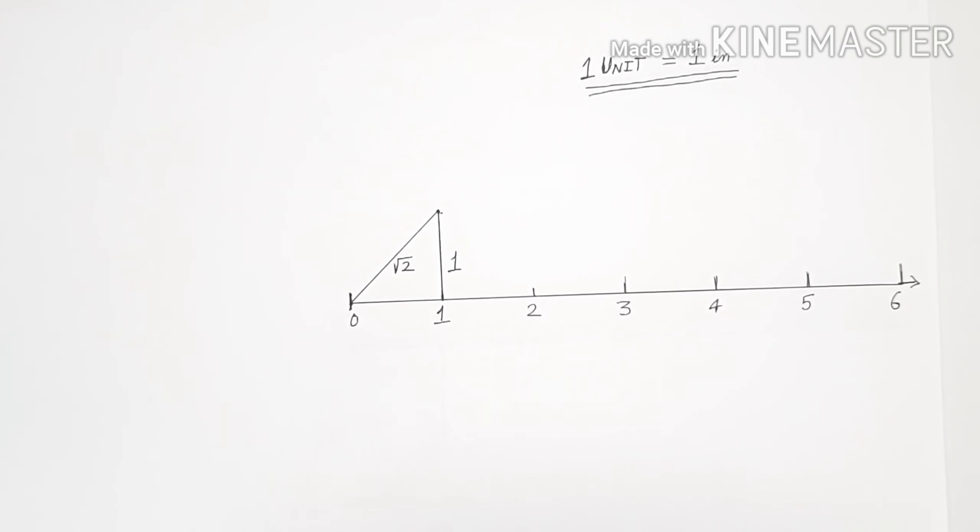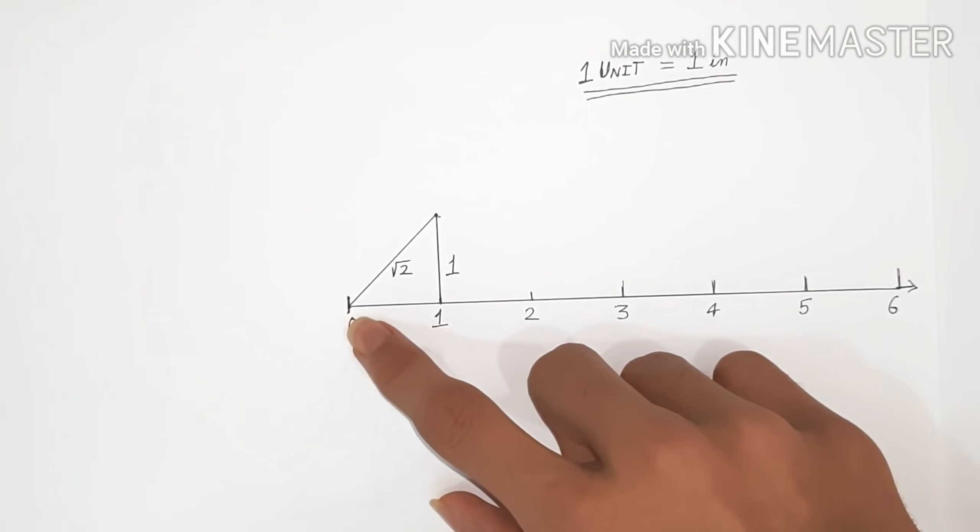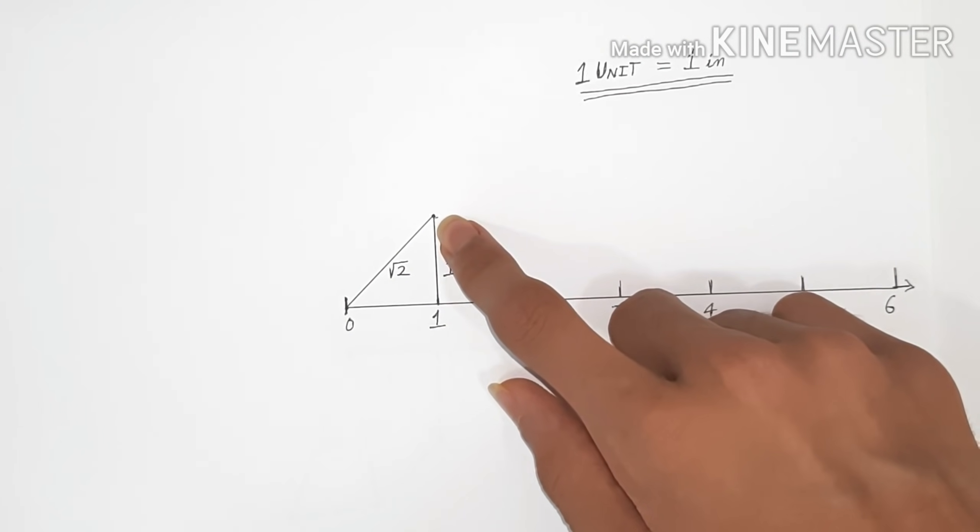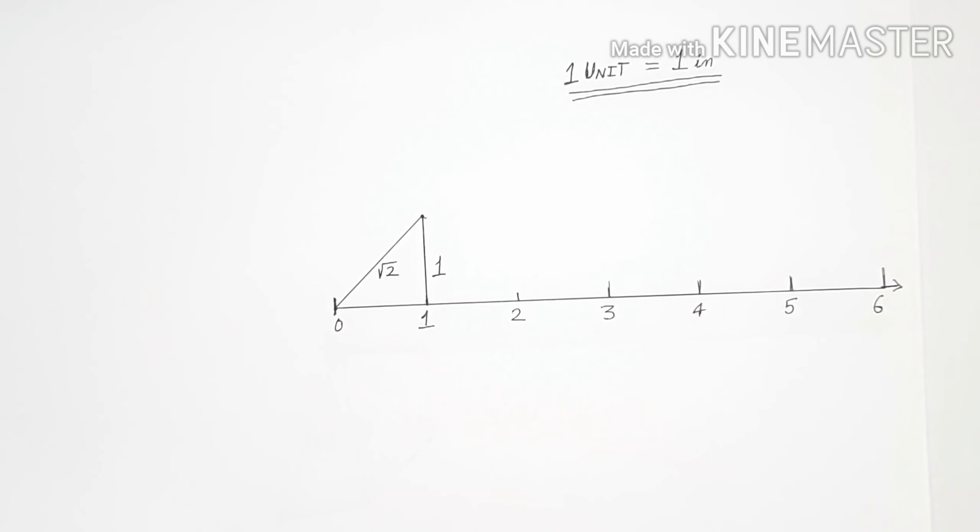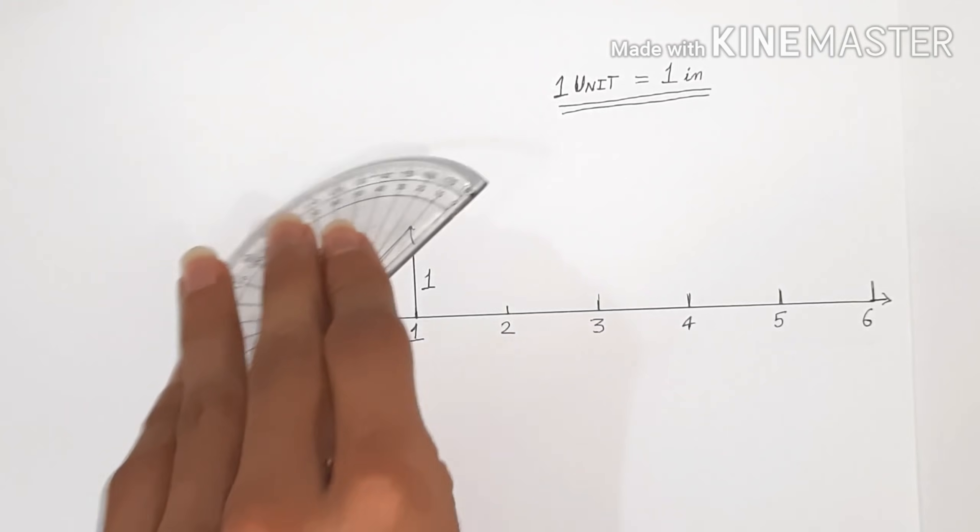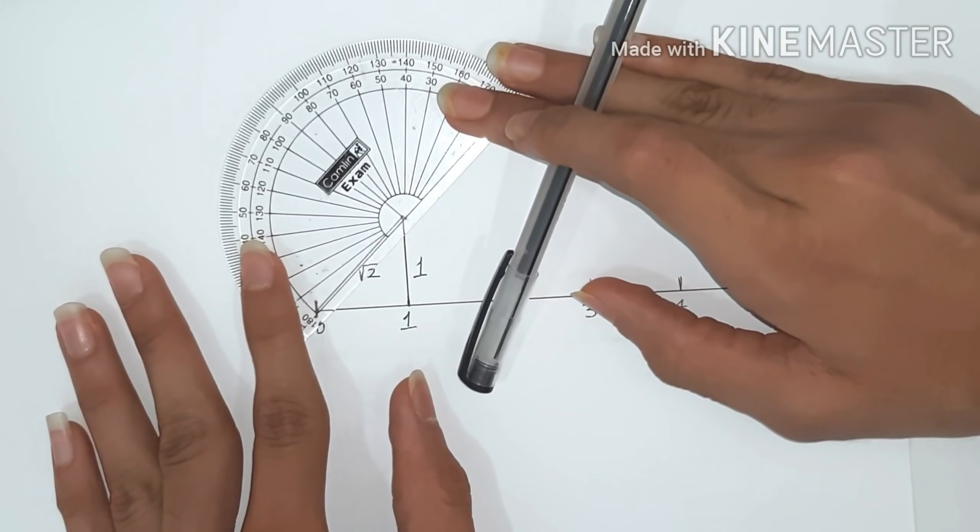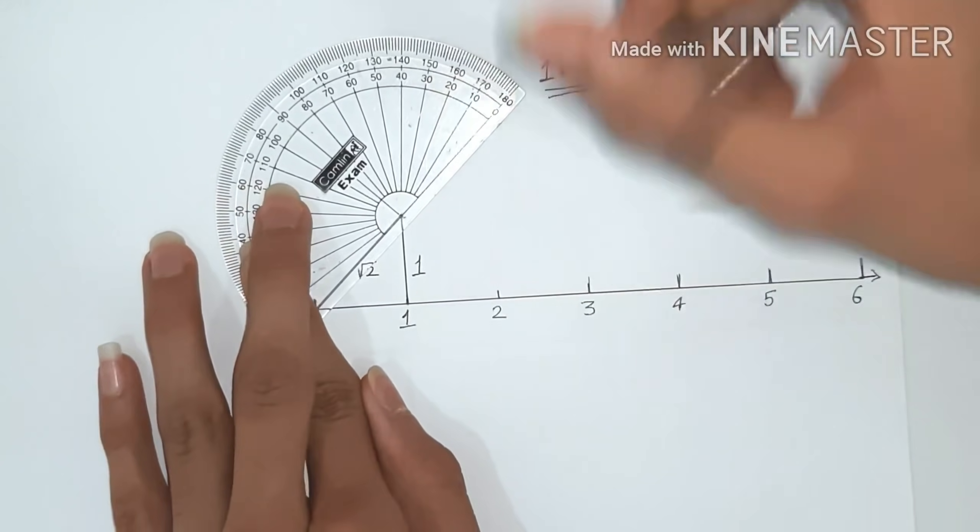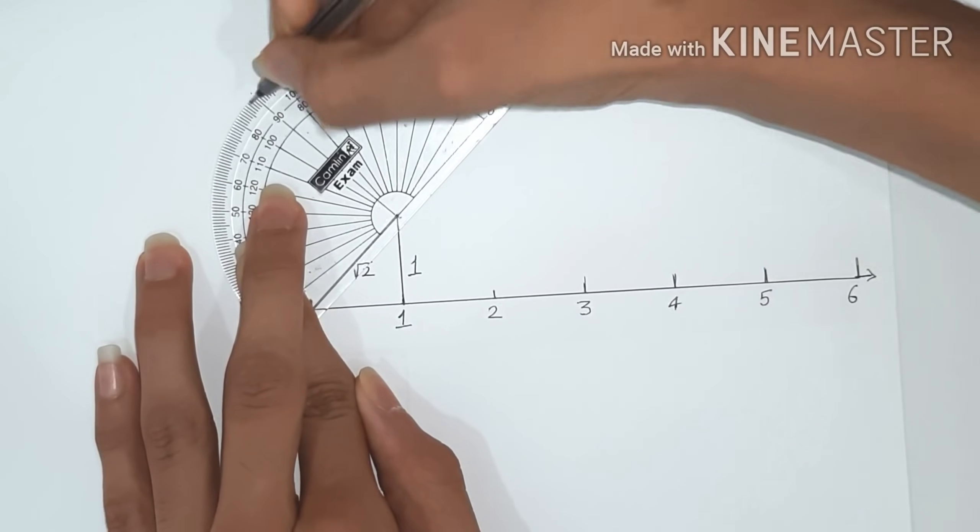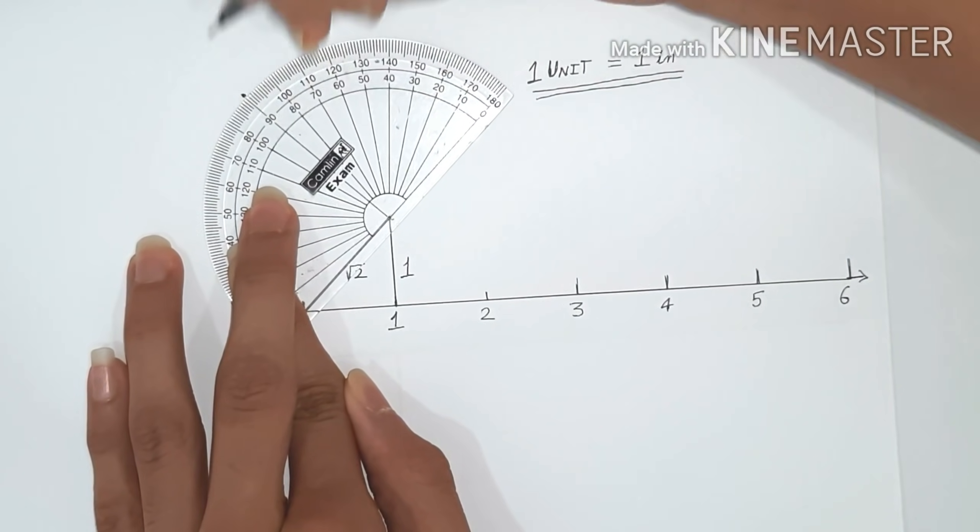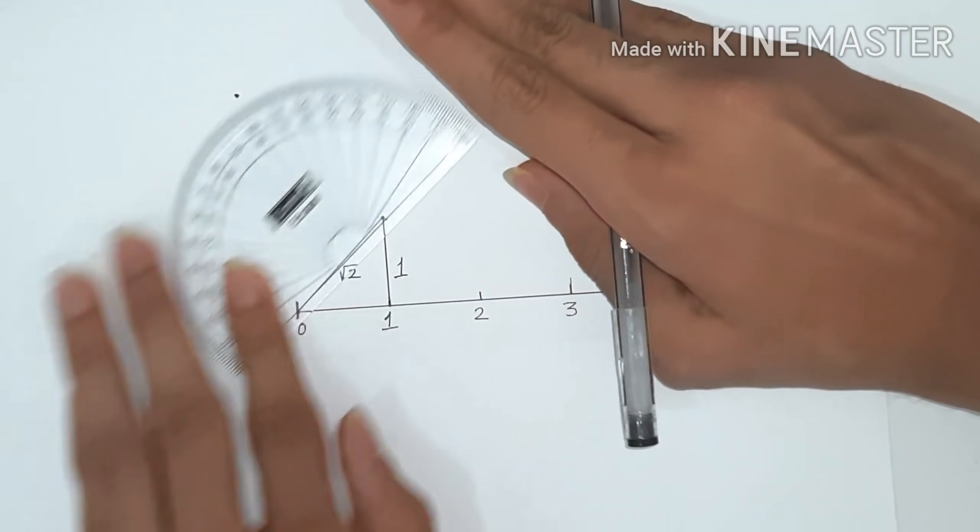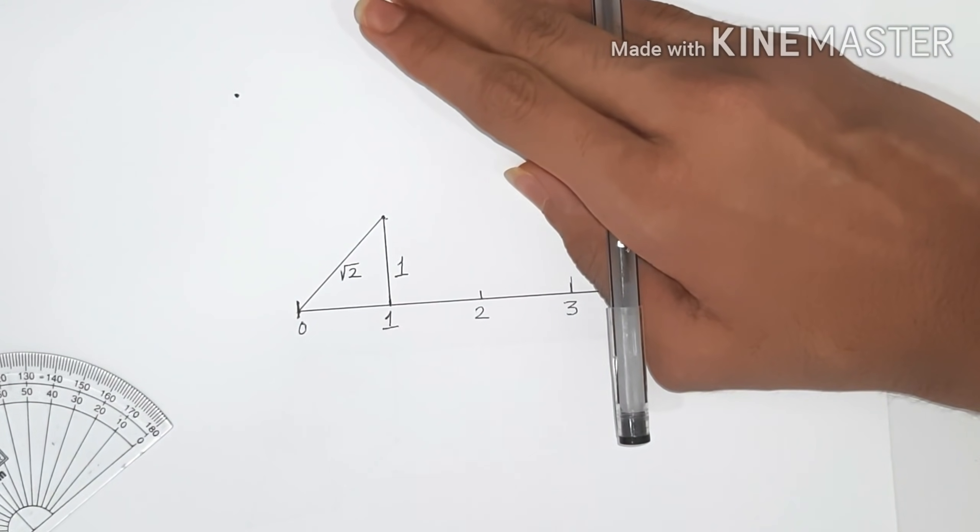Now we'll get a protractor and with square root 2 as the base, we'll draw square root 3, 4, and so on. So here we have our protractor and let's mark a point perpendicular to it, that means on 90 degrees. Now we'll draw a line perpendicular to it, but we'll only extend the line till one inch.